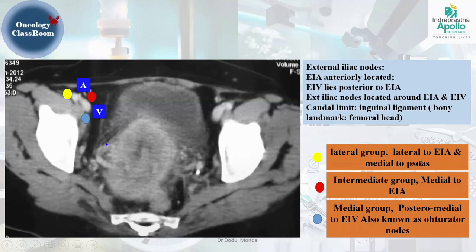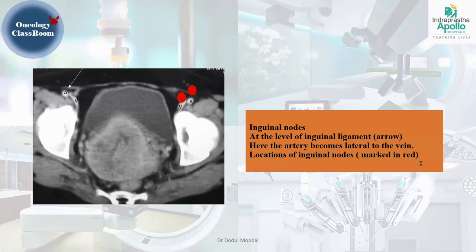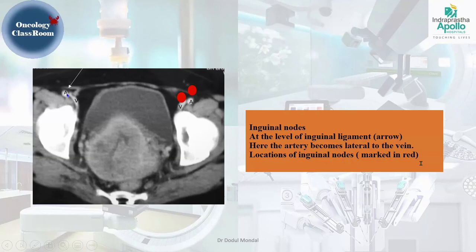We are now at the lower end of the pelvis. The inguinal node and inguinal ligament are visible. The femoral head or roof of the acetabulum is the landmark that ends the contouring of pelvic lymph node groups. The external iliac group ends here and continues as the femoral group or inguinal lymph nodes. The external iliac artery crosses the inguinal ligament and continues as the femoral artery.